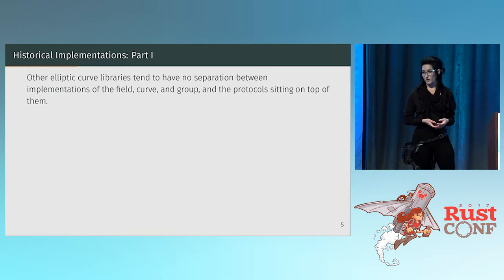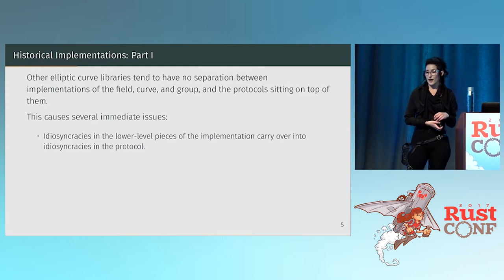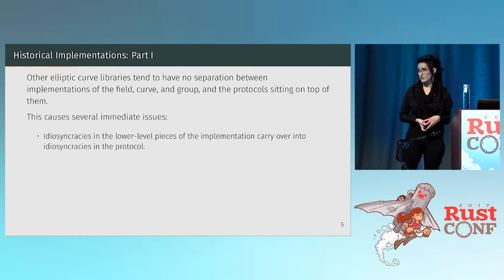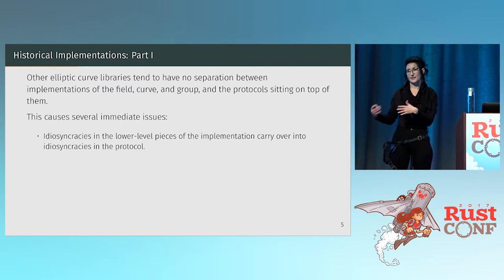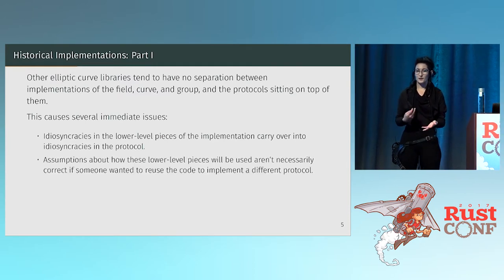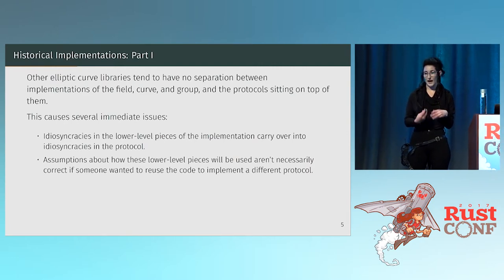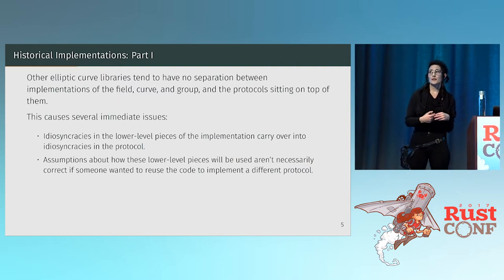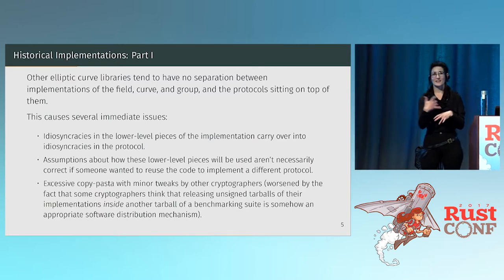This ends up causing a lot of problems. You end up with idiosyncrasies in the lower-level pieces of code that carry over to the higher-level protocol implementations — things like accidentally flipping a sign, where the protocol comes out implemented correctly only because it's also accidentally flipping the sign in the reverse direction. You get the right output but for the wrong reasons. There are also problems with assumptions about how these lower-level pieces are supposed to behave that aren't correct if you try to use the field or group implementations for a different protocol. This also results in super excessive copy-pasta.